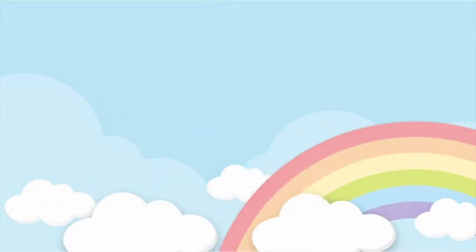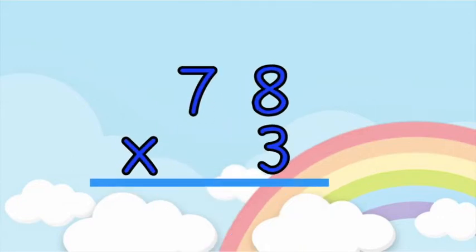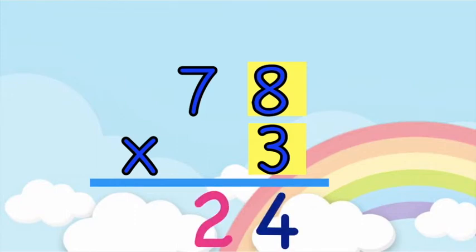Let's have the next number: 78 times 3. Again children, let's multiply the second factor to the ones place. 3 times 8 — let's do it together: 3, 6, 9, 12, 15, 18, 21, 24. So we have 24. All you need to do is carry 2 at the top of 7.